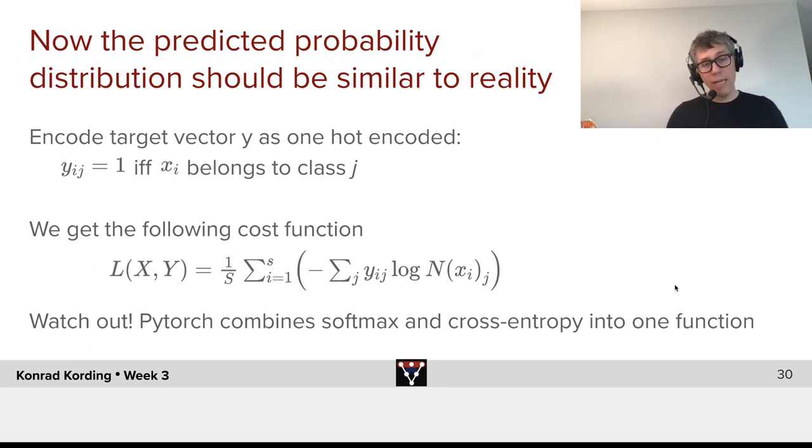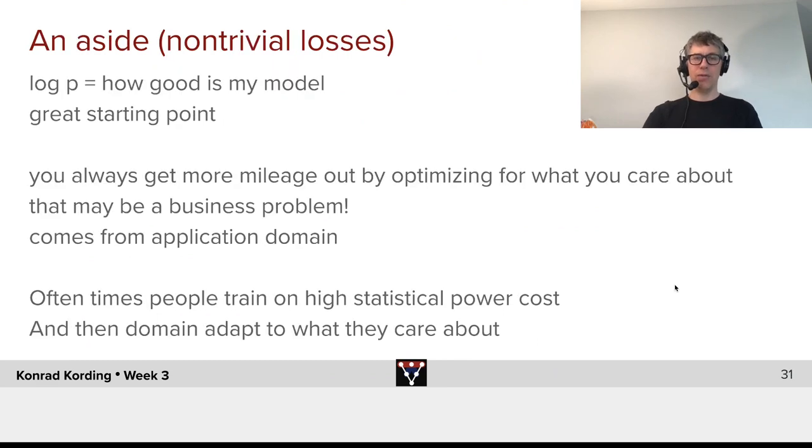Now, there's a warning that is really important, which is PyTorch combines softmax and cross entropy into one function. I've seen a good number of people run softmax and then put it into the cross entropy function in such a way that softmax was run twice, which, of course, won't work very well. Okay, so this is now how we can take the problem of classification and formulate it as a loss function that really makes sense to us.